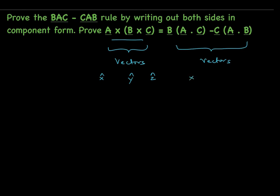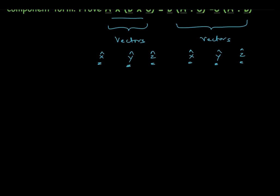Similarly, the vector on the right hand side also has an X component, Y component, and Z component. Our job would be to show that the X component on the left hand side equals the X component on the right hand side, the Y component on the left equals the Y component on the right, and the Z component on the left equals the Z component on the right. We can just verify the X components match, and then by arguments of symmetry, prove that the Y and Z components on either side are also equal.